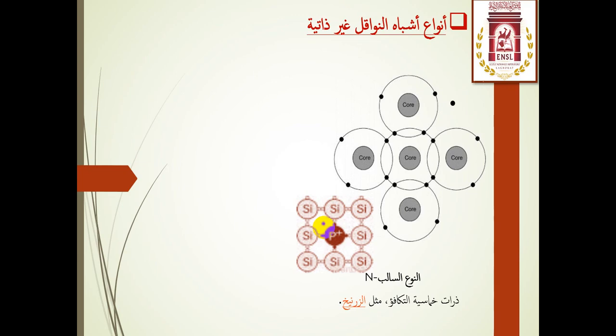ملاحظة: نصف الناقل لم يعود متعادلا كهربائيا، إذ صار فيه أيون موجب ذرة مانحة. كل ما زادت هذه العملية وتكررت أصبح لدينا عدد كبير من الإلكترونات الحرة. هذه الإلكترونات تسمى حاملات الشحنة الأساسية بالنسبة إلى النوع N.